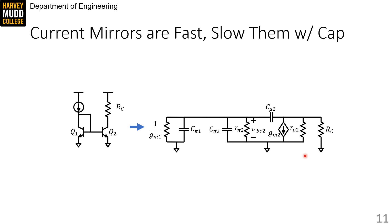First, current mirrors are quite fast, and that's mostly because Q1 is diode-connected, so it looks like 1 over GM to ground, and that means cπ1 and cπ2 see small impedances. They see this 1 over GM.